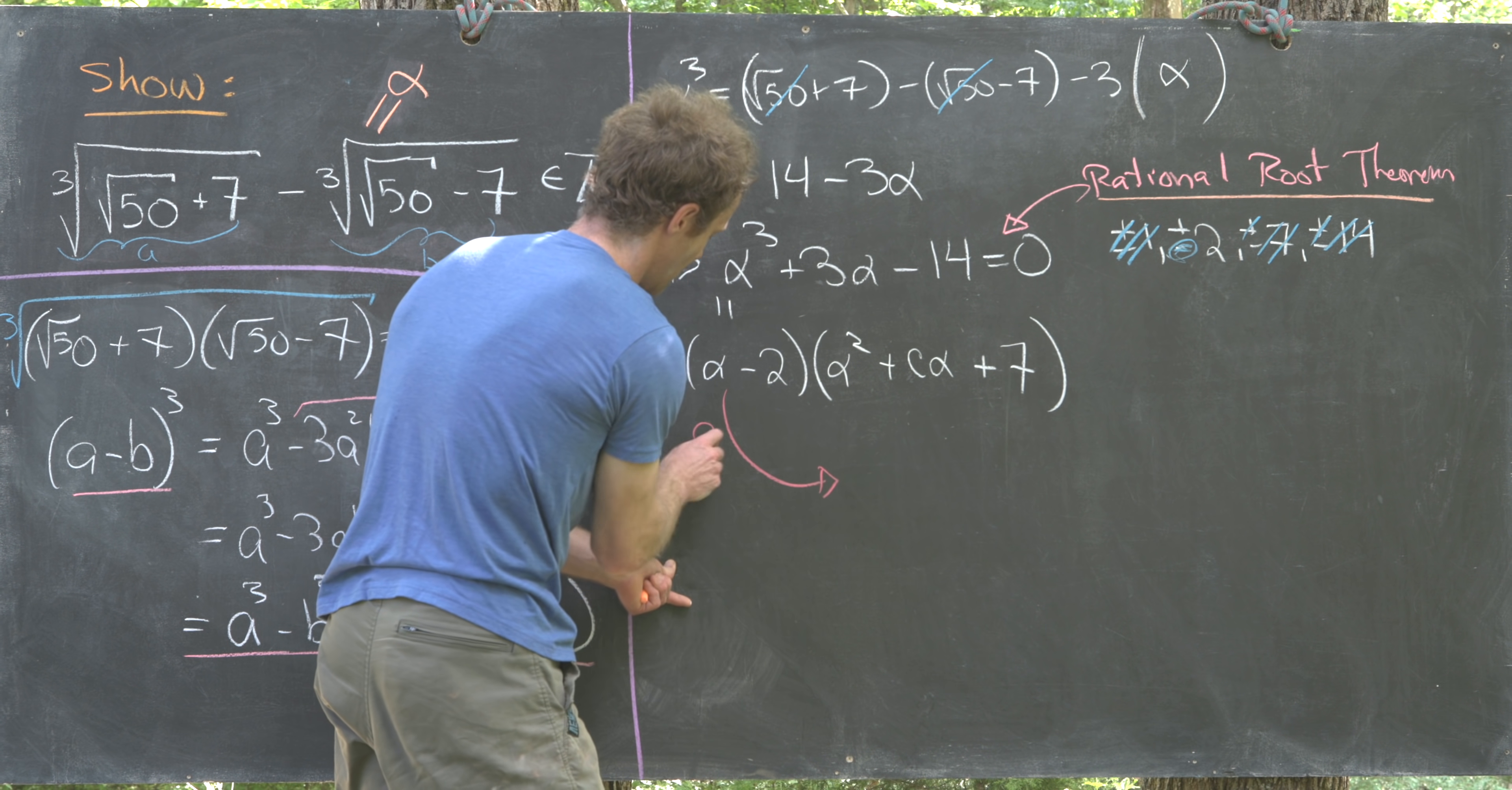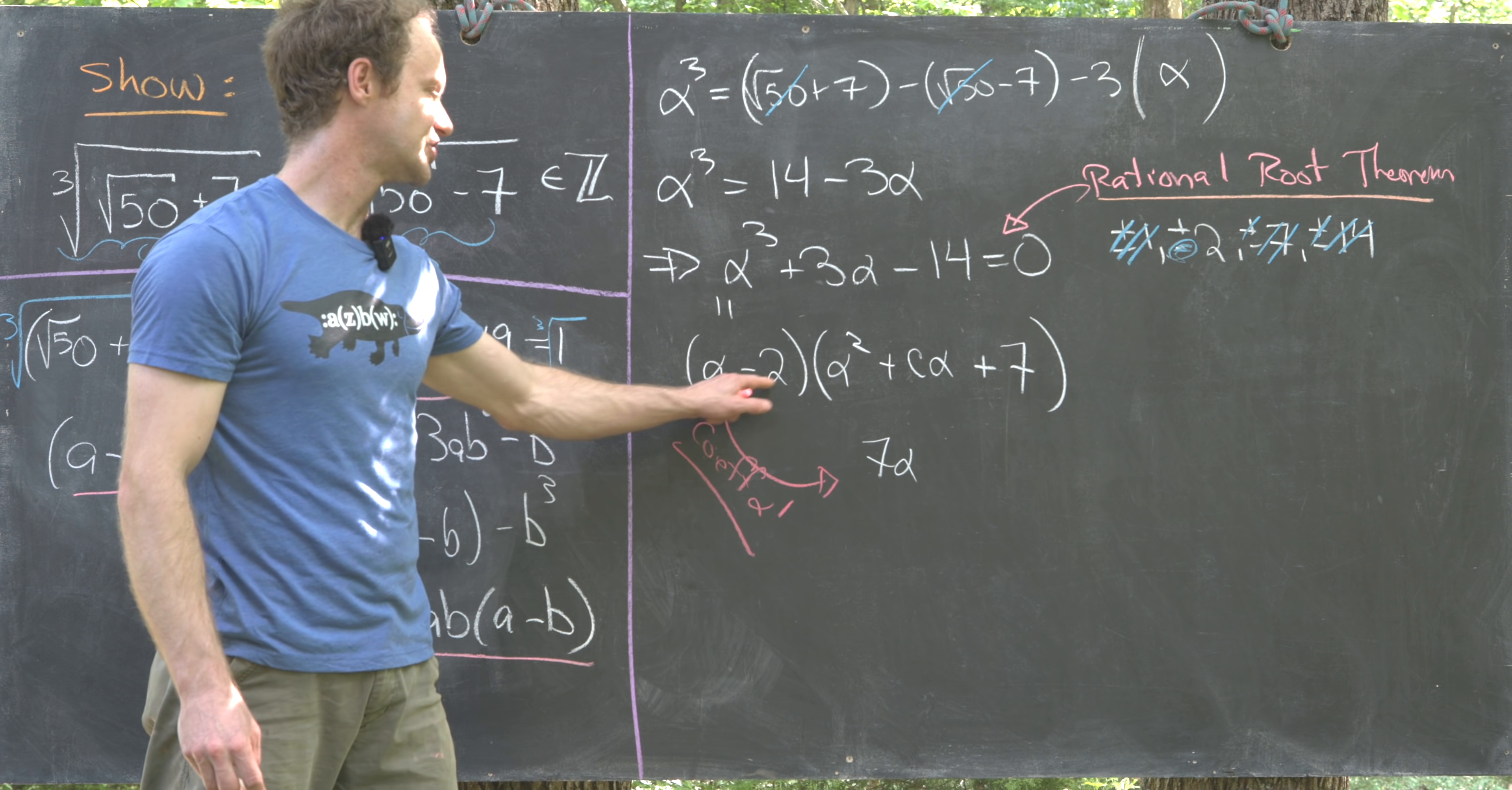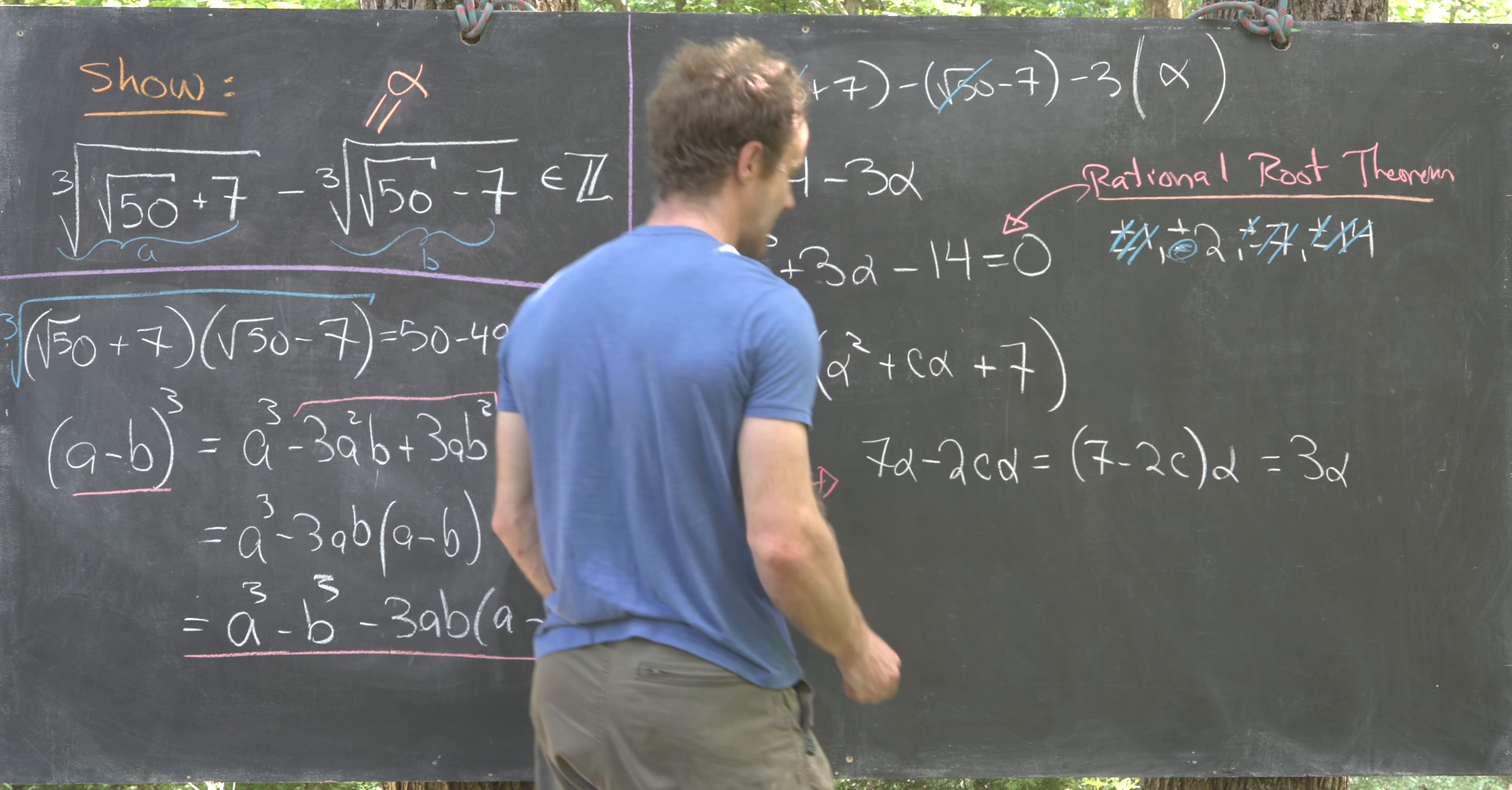If we focus on the coefficient of alpha to the first power in this expression, we'll get alpha times 7, so that's 7 alpha. Then we'll have minus 2 times c alpha, that's minus 2c alpha. We could write that as 7 minus 2c times alpha. Our coefficient of alpha up here is 3, so that means we need this to be equal to 3 alpha.